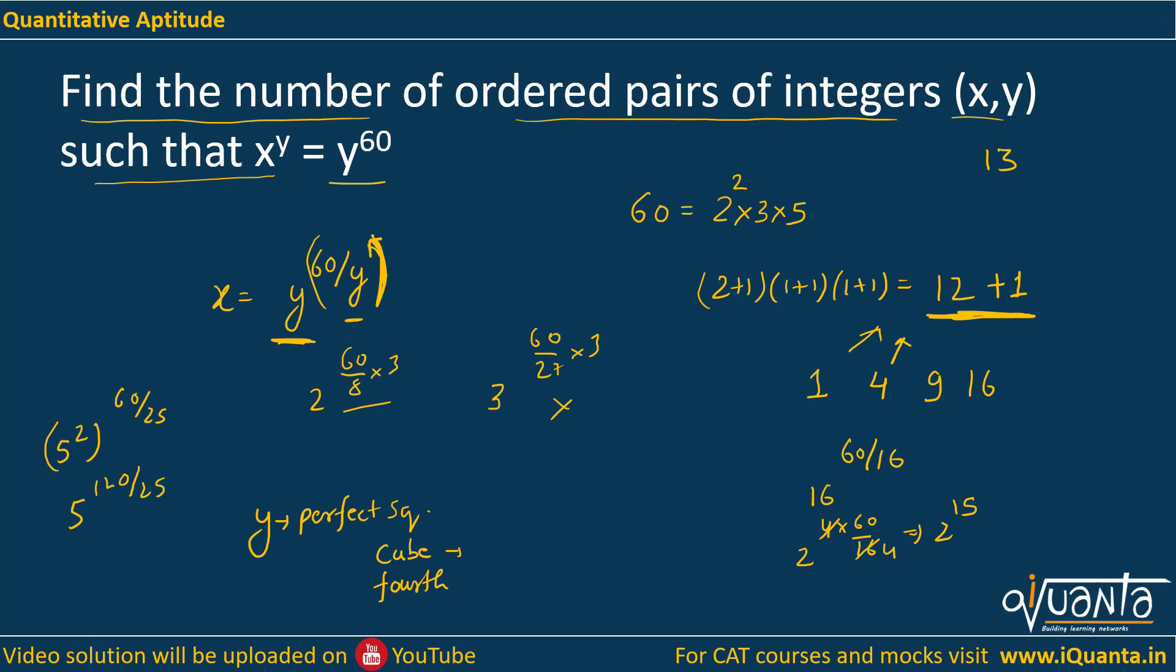Perfect fourth power. We have already checked 16. 3 to the power 4 would become 81, that is going beyond 60. So we will stop here.